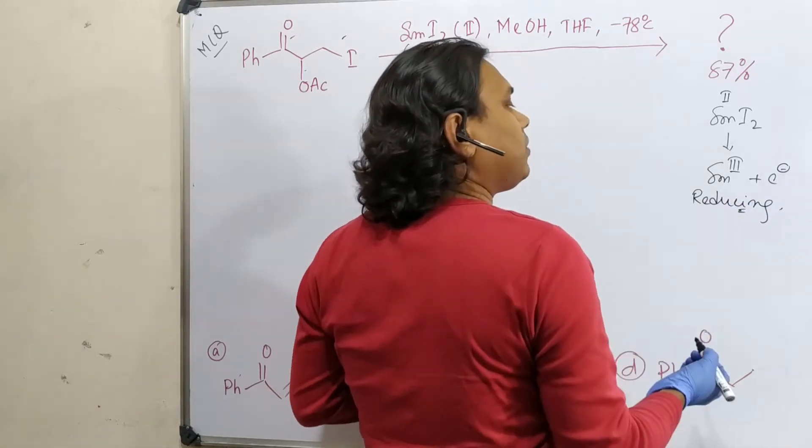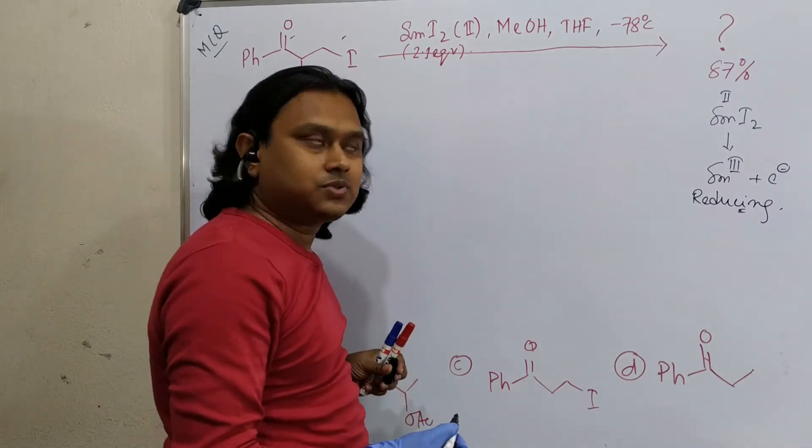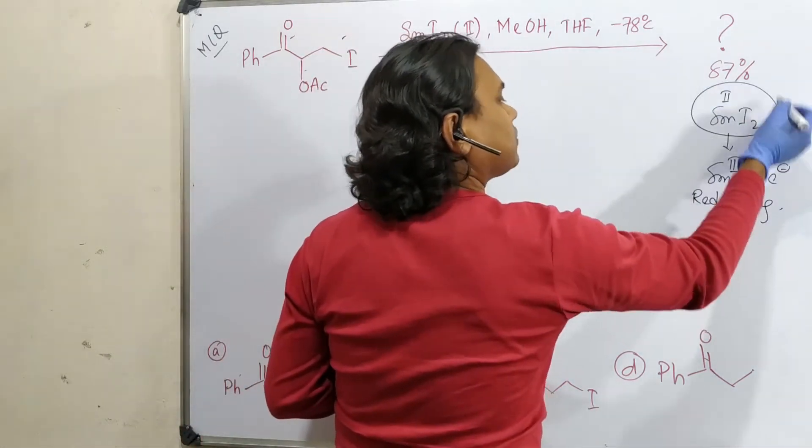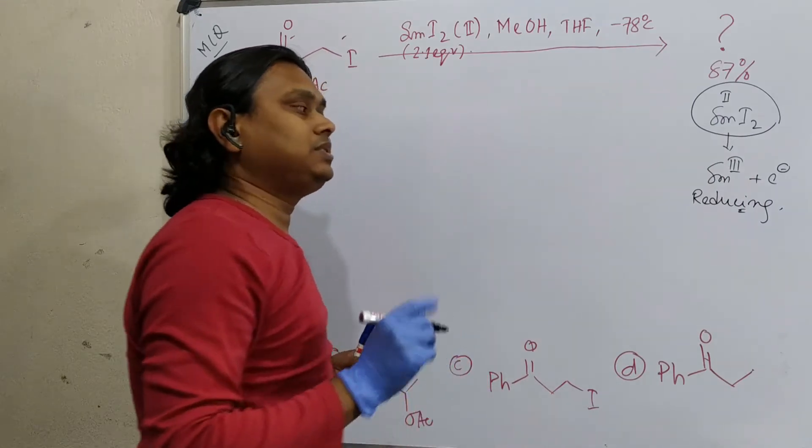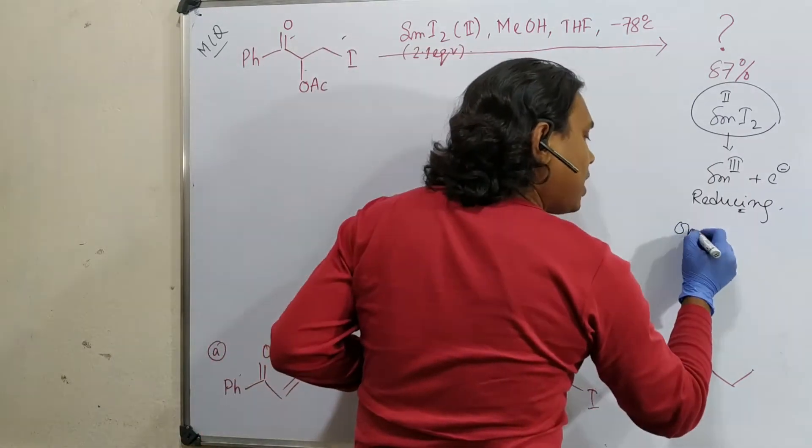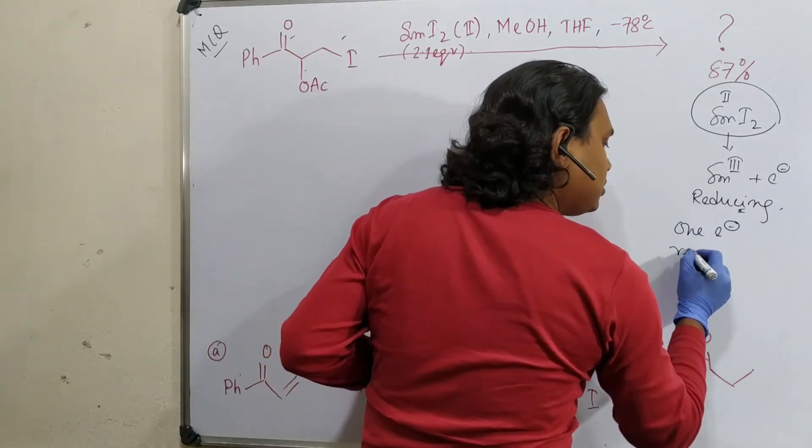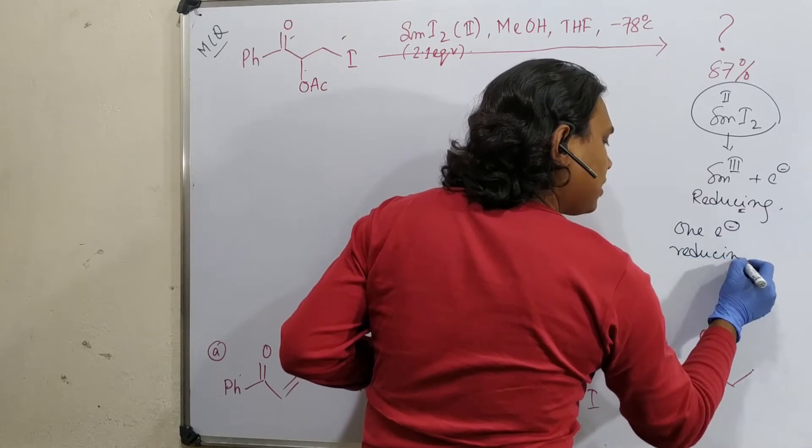Because the stable oxidation state of lanthanides is plus three. And whereas I have taken the reagent in plus two oxidation state. That's why this is, remember, one electron reducing agent.